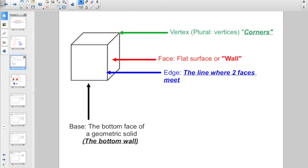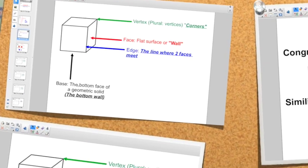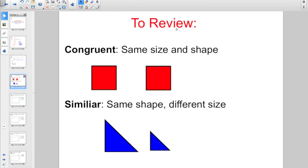And that means the corners. The face, that's the flat surface or wall. The edge is the line where two faces meet. And the base is the bottom face or the bottom wall of any geometric solid.